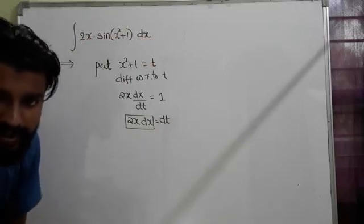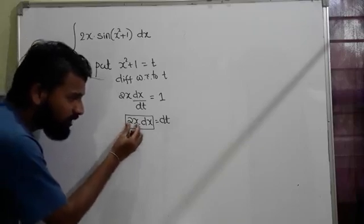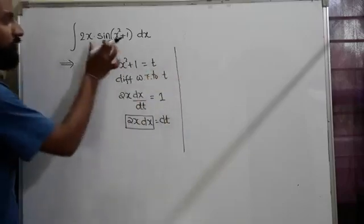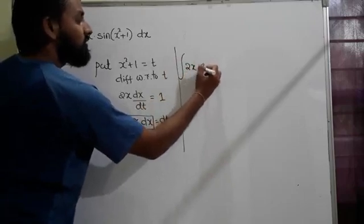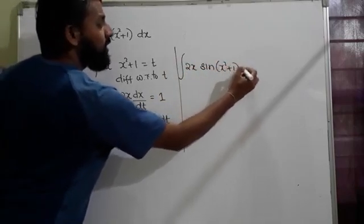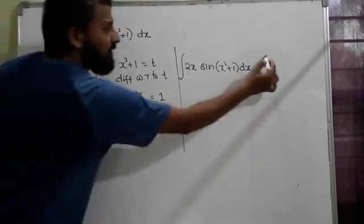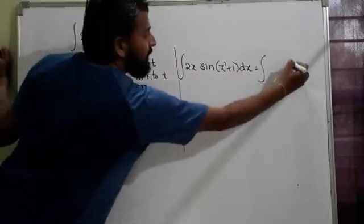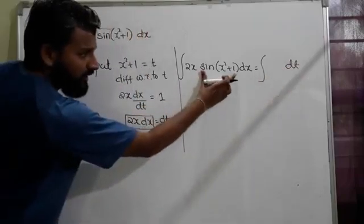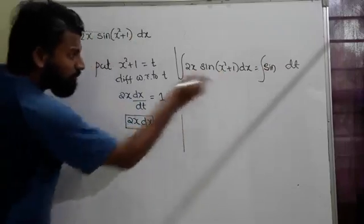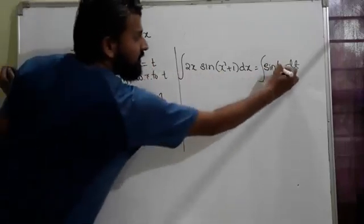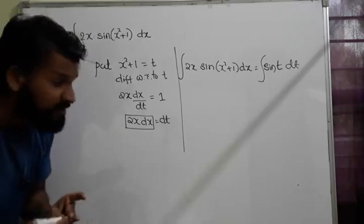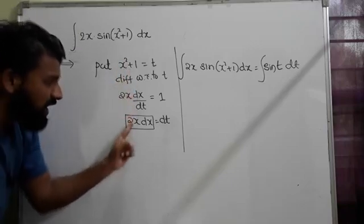I'll keep it here itself. Let me go back to my question: 2x·sin(x² + 1)·dx. 2x and dx together make dt. So it's ∫sin(t)·dt. x² + 1 we assumed as t, so this is ∫sin(t)·dt.